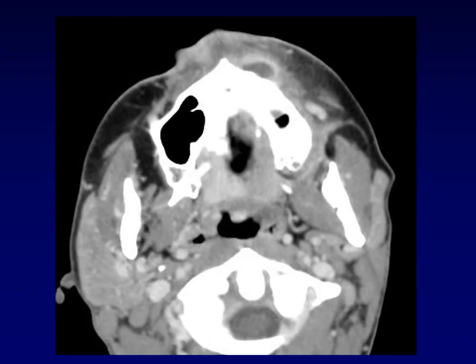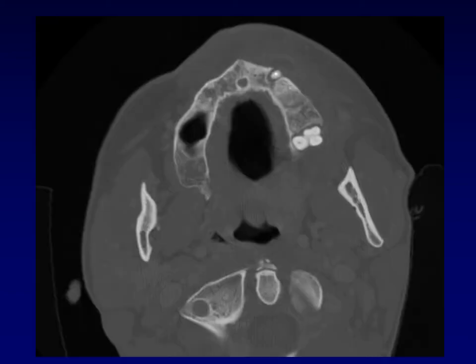This is a patient with swelling of the left face, and this is the classic presentation for an abscess within the facial soft tissues. You can see that there is a rim-enhancing collection in the upper lip, but the source of the infection is not immediately obvious. When we switch to bone windows, we can identify the source of infection. You can see that this is a tooth that previously had a root canal and has developed extensive periodontal disease with an apical abscess.